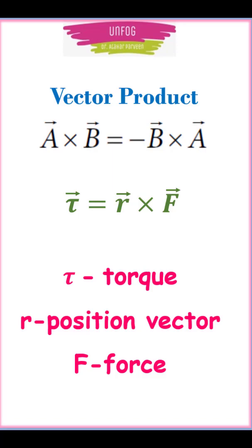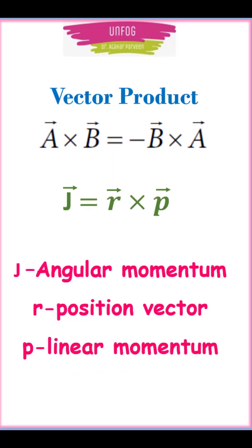For example, torque, that is the turning effect of force, is equal to R cross F and not F cross R. Similarly, angular momentum is equal to R cross P and not P cross R.